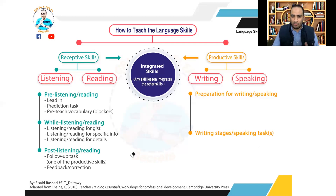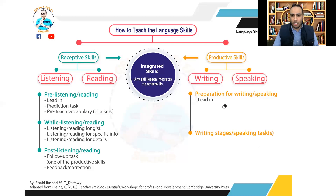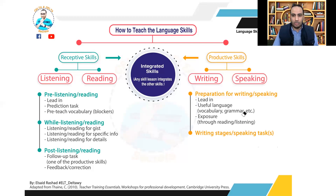Now let's move on to the productive skills lesson — writing or speaking. We have two main stages: the first is preparation for writing or speaking, and the second is the writing or speaking task itself. Each stage has sub-stages which are also flexible. You start with a lead-in to activate students' prior knowledge and generate interest in the topic. Then you move on to teaching useful language — grammar or vocabulary — that students might need while doing the writing or speaking task. You can also expose students to a reading text before they write, or a speaking task before they speak. For example, if they are going to write a friendly letter, you expose them to a model friendly letter so they see how it looks.